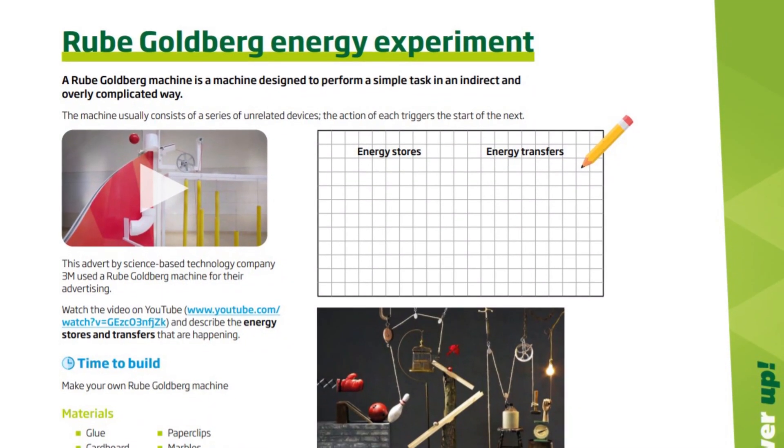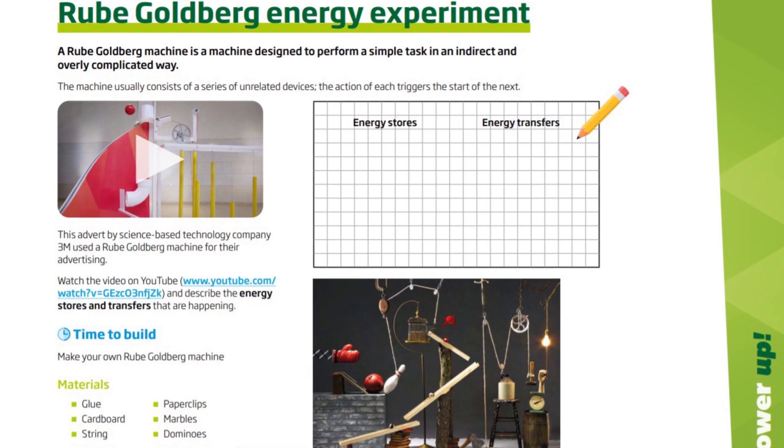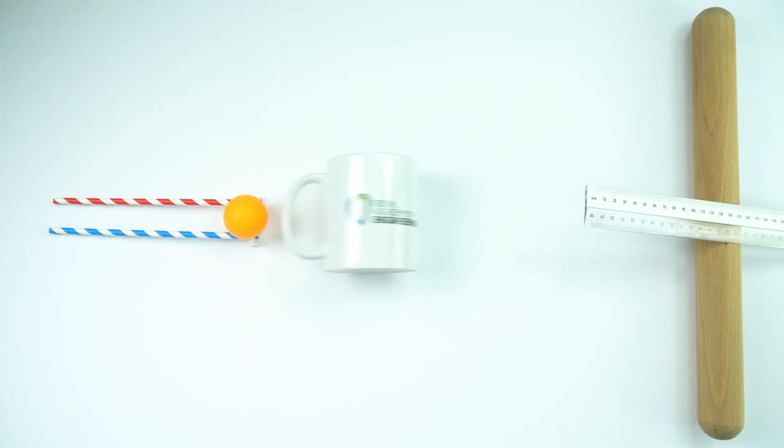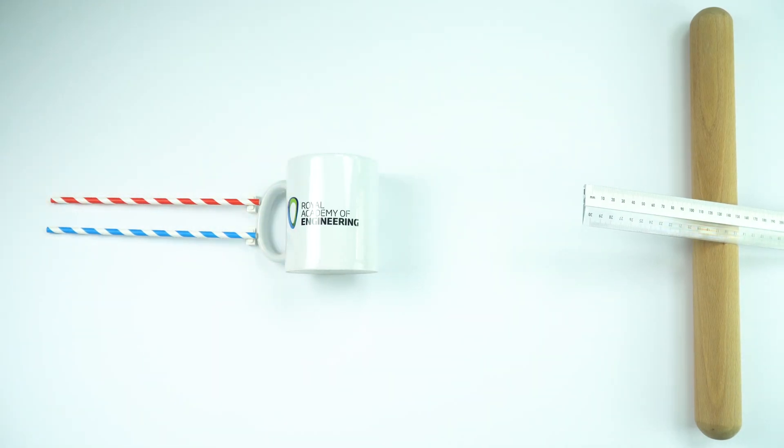The next activity is brilliant for students to get involved with — it's making a Rube Goldberg experiment. This is something which does something very simple in a really complicated way, and there are some fantastic videos on YouTube of people who've made their own ones at home. This is not only about considering different energy stores and transfers, but it's a great chance for students to get hands-on experience making something actually work. Even at home they could do this around the house using everyday objects and make a short video or take some photos to show what they've achieved.